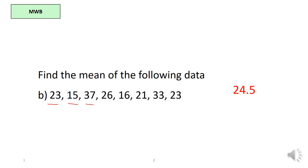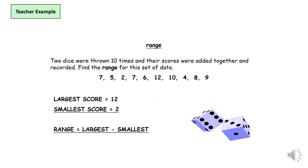Okay, now we are going to move on to range. The range is the difference between the largest and smallest score. Two dice were thrown ten times and the scores are added together and recorded. These are the scores here. Find the range for this set of data.